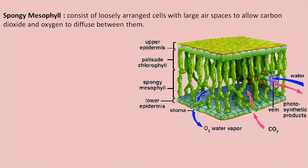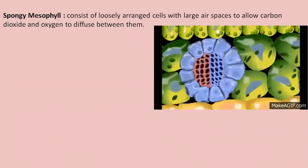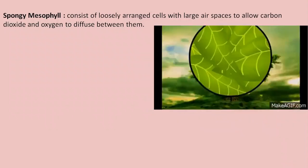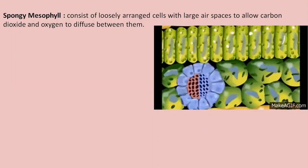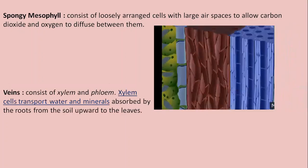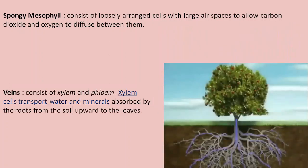Plant veins consist of xylem and phloem. Xylem cells transport water and minerals absorbed by the roots from the soil, moving them upward towards the leaves.